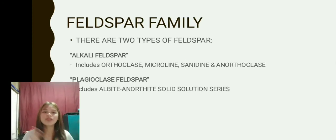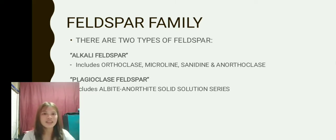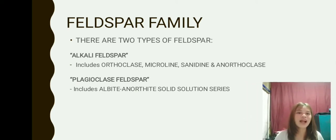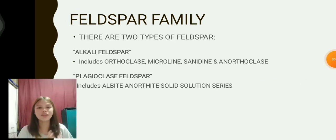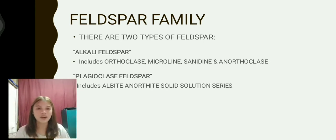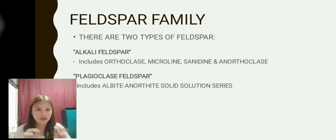There are two types of feldspar. The alkali feldspar includes orthoclase, microcline, sanidine, and anorthoclase. The second type is plagioclase feldspar, which includes the albite–anorthite solid solution series. The difference between the two: alkali feldspar color ranges from white to brick red and is typically opaque, while plagioclase feldspar color ranges from white to dark gray and is typically translucent.